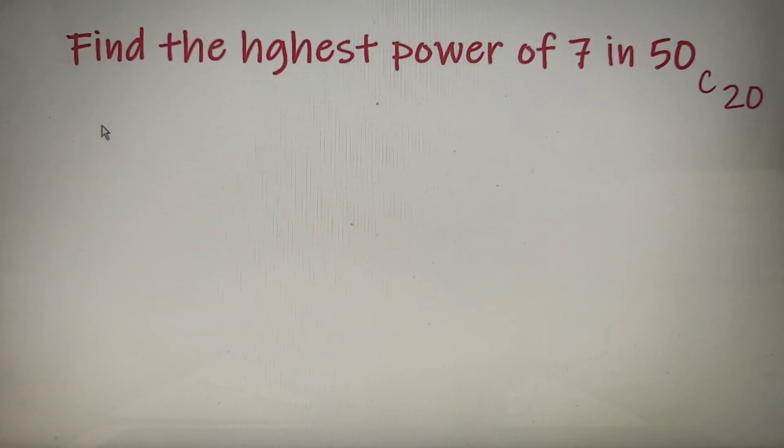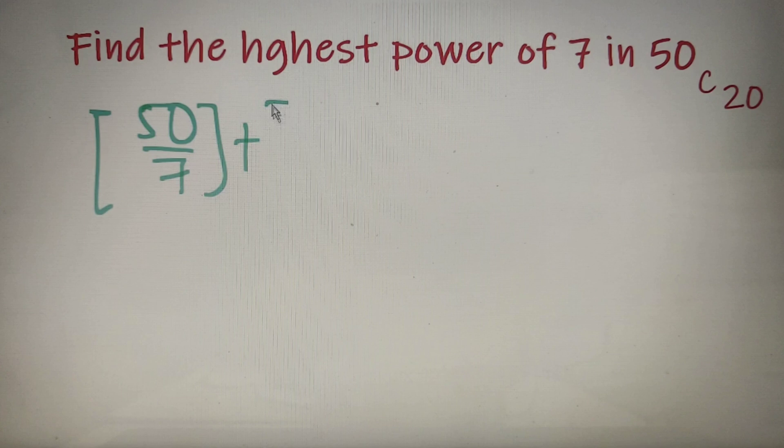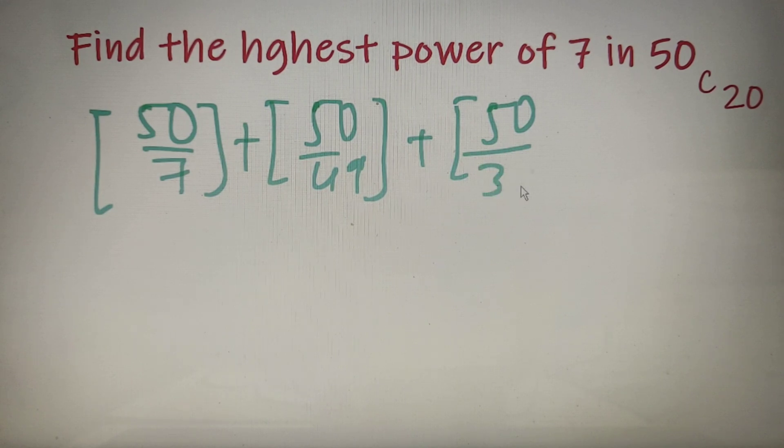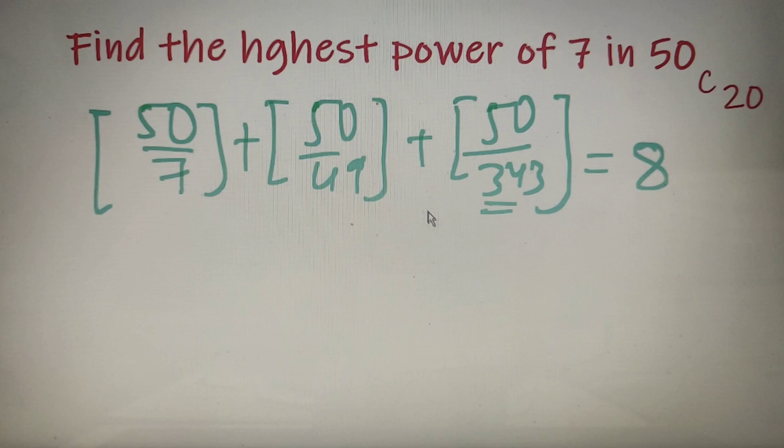The highest power of 7 in 50 factorial is equal to the summation of greatest integer value of 50 divided by 7 plus 50 divided by 49 and lastly 50 divided by 343. We have moved up to 343 because 343 is greater than 50, and this value on calculation will come out to be 8. So the highest power of 7 in 50 factorial is equal to 8.